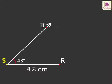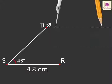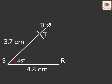Step 3. With S as center and radius 3.7 cm, draw an arc cutting ray SB at T. Step 4.